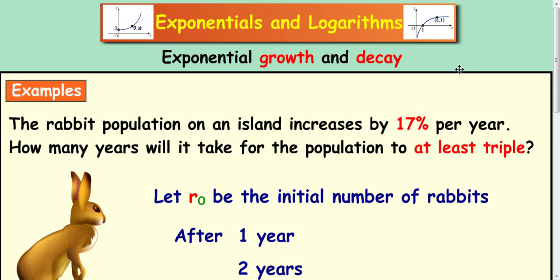In this example we're going to look at a rabbit population and try to work out how long it will take for the population to at least triple. Now the rabbit population on the island increases by 17% per year. So how do we do this?